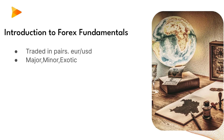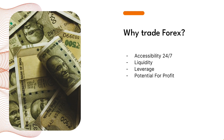There are many types of currency pairs: major, minor, and exotic. Major currency pairs involve the most traded currencies such as the US dollar, euros, and the Japanese yen. Minor currency pairs include less traded currencies like the New Zealand dollar or the Swedish krona. Exotic currency pairs involve a major currency and a currency from an emerging market, such as the US dollar and the South African rand.